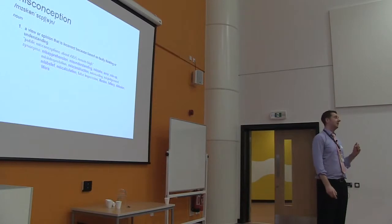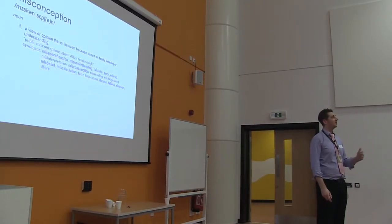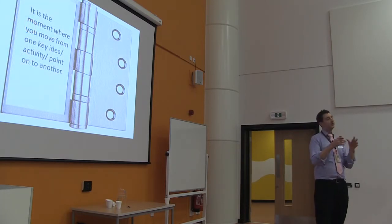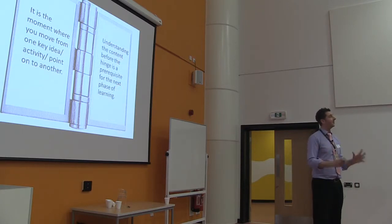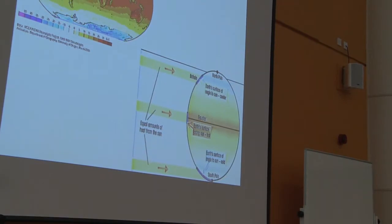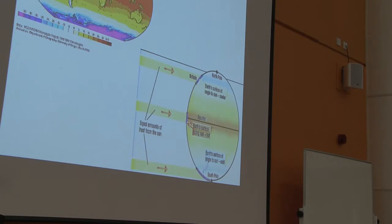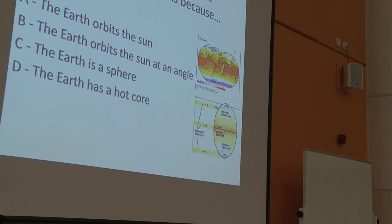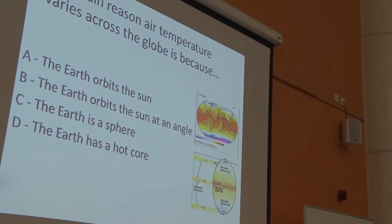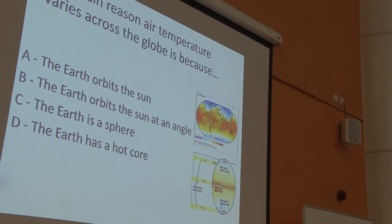Marking and feedback has been on the agenda at our place for the last couple of years. Hinge questions are great ways of diagnosing what students do or don't know at certain points in a lesson or learning sequence. The principle is a question you pose at a key moment in a lesson before you move on — understanding it is a prerequisite for what comes next. In our Year 8 geography class, I'll teach students why air temperature varies across the world, then drop this question at them. The distractors are either misconceptions from the past or almost plausible but not quite right. I'm looking for answer C, and if they've got it I'll move on; if not, I make an intervention there and then to close the gap.